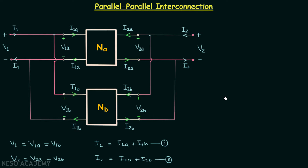In a parallel combination, the voltage across the elements remains the same and the current gets divided. At the input port, V1A equals V1B and current I1 is divided into I1A and I1B, so the input port of network NA is in parallel with the input port of network NB. At the output port, V2A equals V2B and current I2 is divided into I2A and I2B, so the output ports of the two networks are also in parallel. This is why we call this a parallel-parallel interconnection.